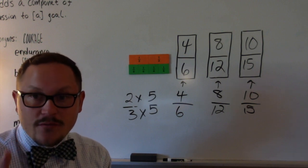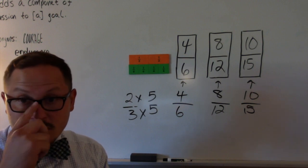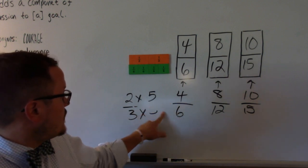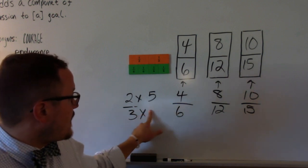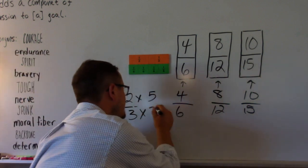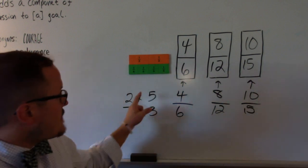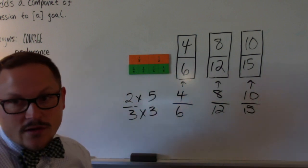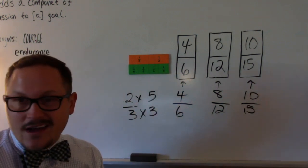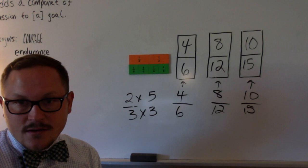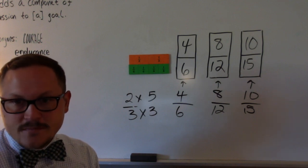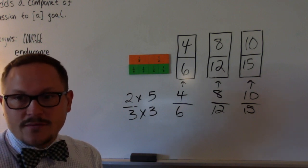However, if I were to do times 5 on the top and times 3 on the bottom, that would not work — that would not yield a common equivalent fraction. So I hope that helped out.